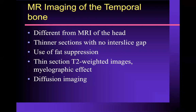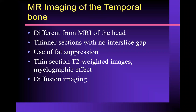We also typically do a thin section T2 weighted image — called FIESTA on a GE magnet, CISS on a Siemens magnet, and phase imaging on a Toshiba magnet. These are thin, heavily T2 weighted, fluid-sensitive images. Fluid is really bright, and you get what we call the myelographic effect, as if you've done a cisternogram. We normally do diffusion imaging as part of our temporal bone protocol. If you do an EPI diffusion sequence, as used for brain MRI, the slices are too thick and there are susceptibility problems. Newer techniques include propeller diffusion or non-EPI HASTE imaging, which are typically used to look for cholesteatoma.